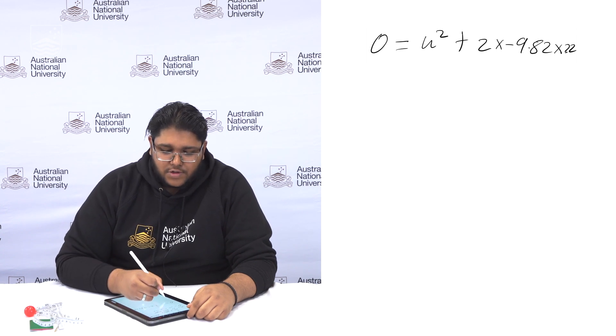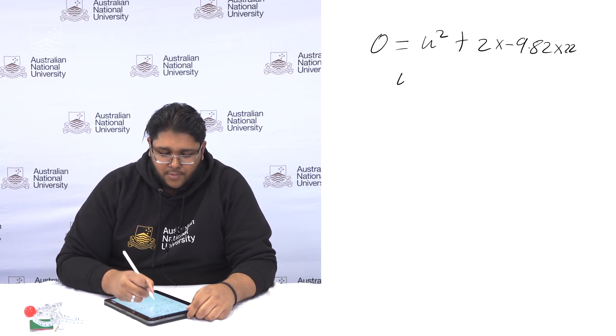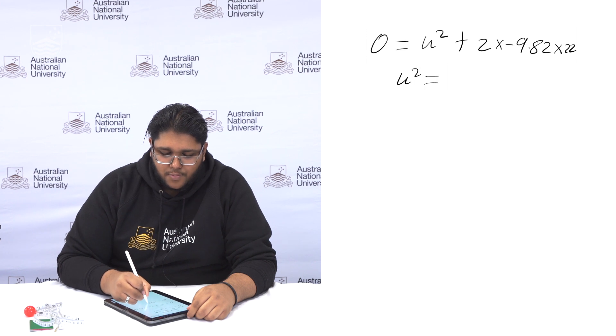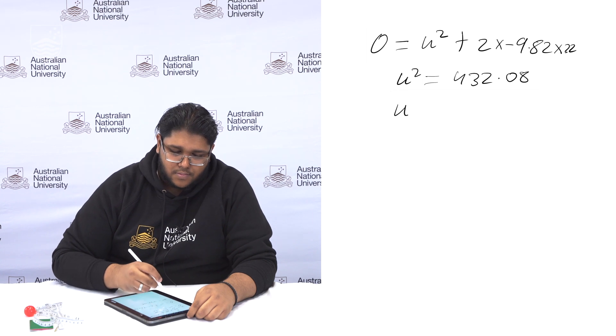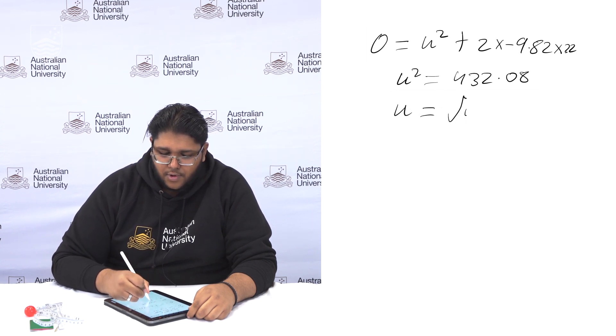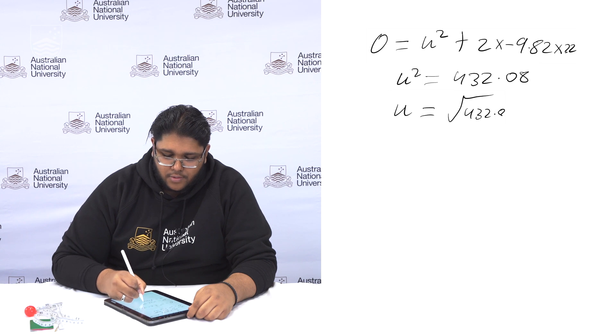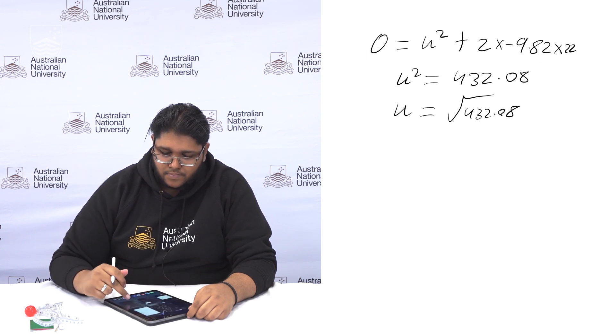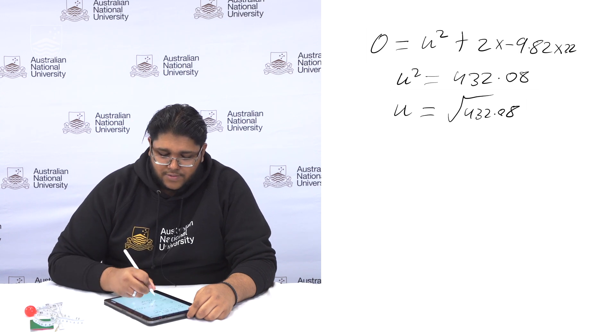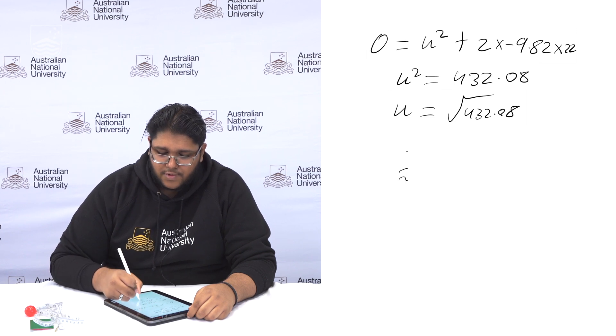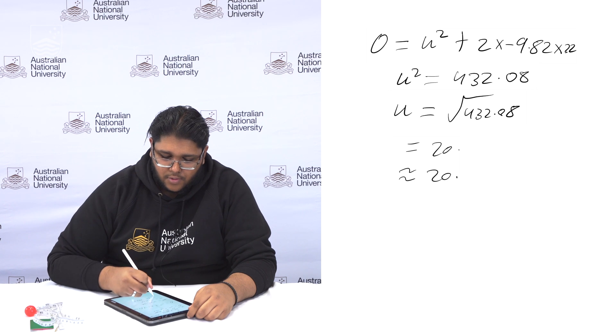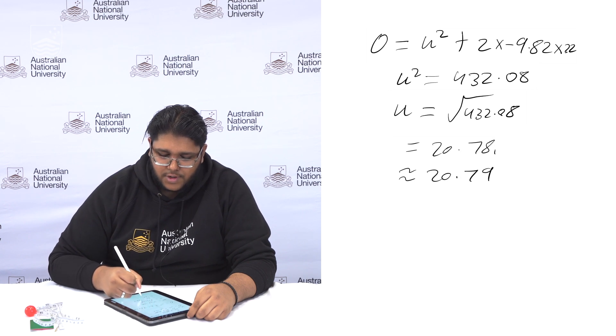Then when we rearrange this we get u squared equals 432.08 and we get u equals the square root of 432.08 and this equals 20.7865 or if we were to round it 20.79.